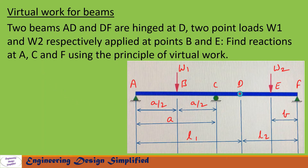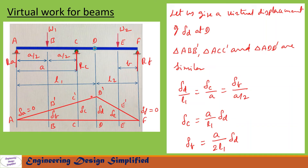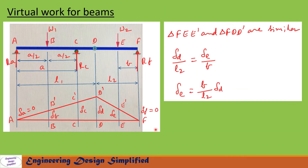First, to find reaction at C (Rc), let us give a virtual displacement of delta_D at D. The two beams will assume positions AB'C'D' and FE'D'. We have three similar triangles: AB-B', AC-C', and AD-D'. From these three triangles we can write: delta_D / L1 = delta_C / a = delta_B / (a/2). From this equation: delta_C = (a/L1) * delta_D, and delta_B = (a/2L1) * delta_D.